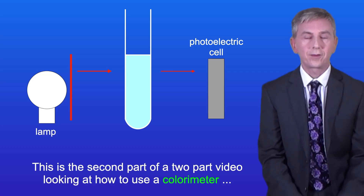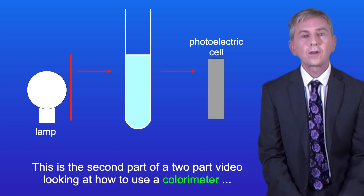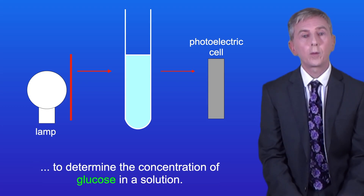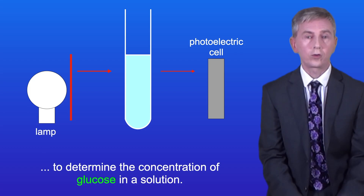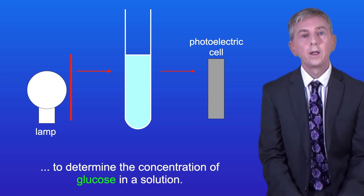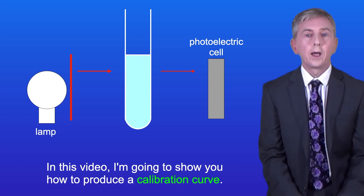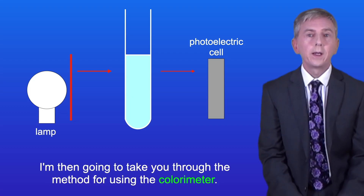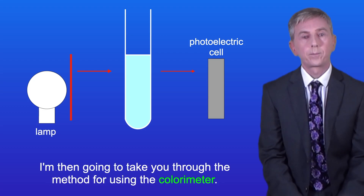Hi and welcome back to Free Science Lessons. This is the second part of a two-part video looking at how to use a colorimeter to determine the concentration of glucose in a solution. In this video, I'm going to show you how to produce a calibration curve, and then take you through the method for using the colorimeter.